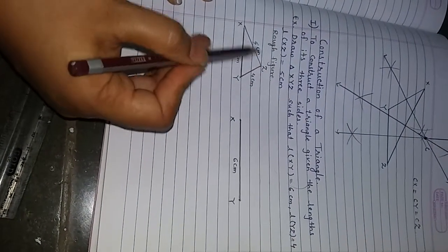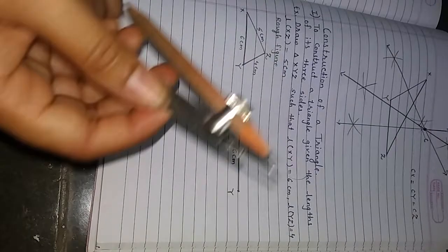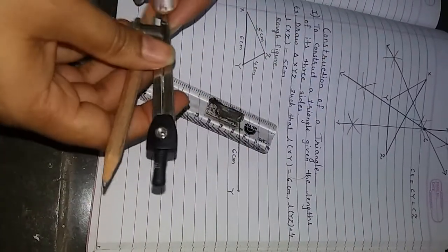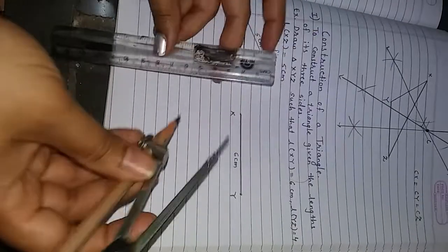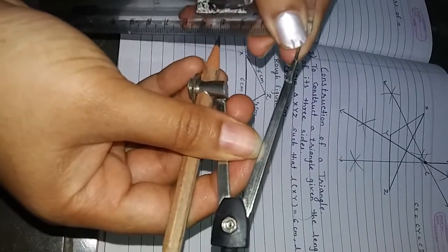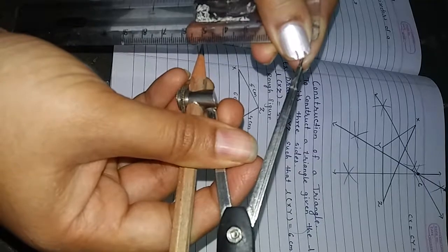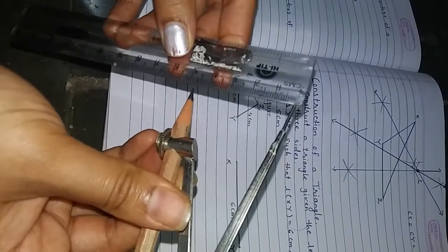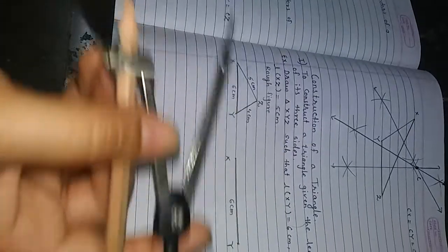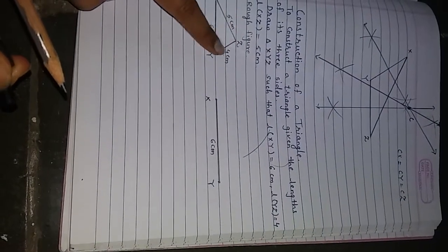Now I am drawing XZ as 5 cm. I am using a compass — take the 5 cm distance in your compass. This is 5 cm distance. Keep the compass point here on X and make an arc. Now this is our point Z.